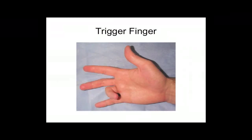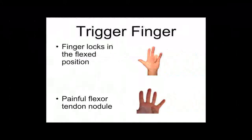Trigger finger — don't forget it if you see it once. The hallmarks: it's usually the ring finger, though it can be any finger. The patient will say their finger gets stuck in flexion and they have to forcefully snap it out. The other physical finding is a small, sore, swollen nodule palpable on the palm just proximal to the triggering digit.